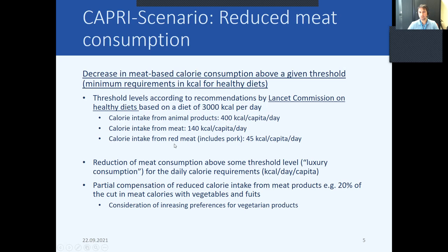Red meat including pork should be limited to 45 kilocalories per day. In this scenario our focus will be on cutting the extra kilocalories consumed above this threshold — what we call luxury consumption. At the same time, to compensate for the reduction in calories, because we don't want people to starve, we will compensate with a 20 percent increase in fruit and vegetables. We will basically convert the meat consumption calories into a 20 percent increase in fruit and vegetables.